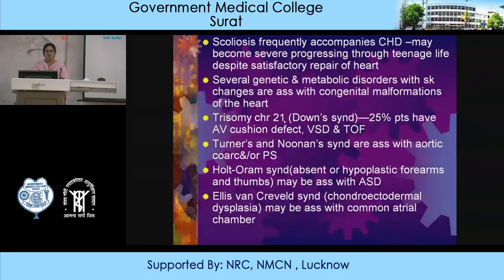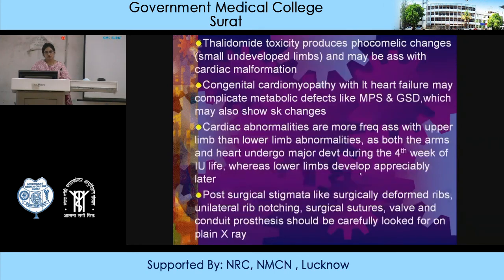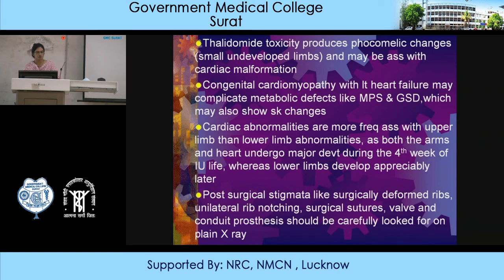Severe genetic and metabolic disorders are associated with skeletal changes: trisomy 21 (Down syndrome), Turner's syndrome, Noonan's syndrome, Holt-Oram syndrome, and Ellis-van Creveld syndrome. Thalidomide toxicity produces phocomelic changes and may be associated with cardiac malformation. Cardiac abnormalities are more frequently associated with upper limb than lower limb anomalies, because both arms and the heart undergo major development during the fourth week of intrauterine life, whereas lower limbs develop appreciably later. Post-surgical stigmata such as surgically deformed ribs, unilateral rib notching, surgical sutures, and valve/conduit prostheses should be carefully looked for on plain X-rays.